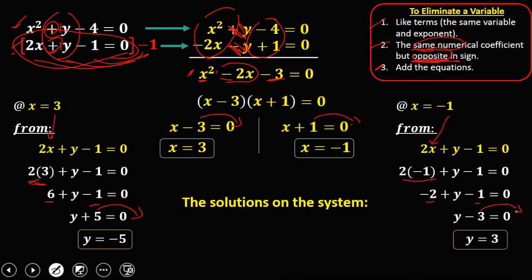So therefore, the solution now on the system, if x equals 3, your y is negative 5. And if x is negative 1, your y is positive 3.